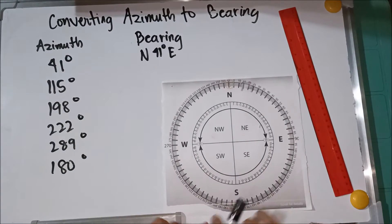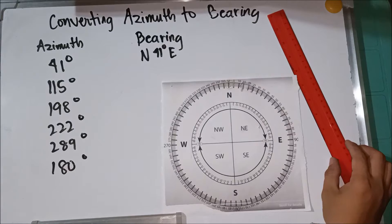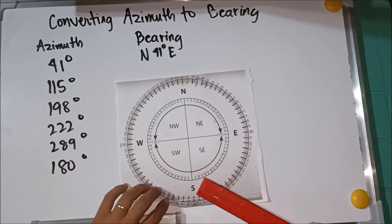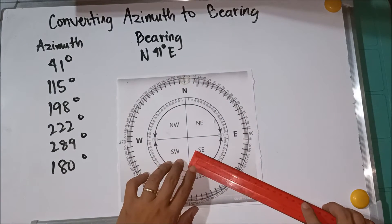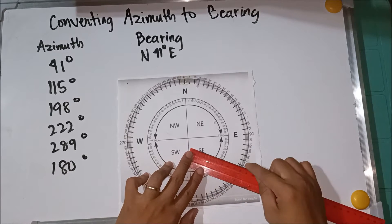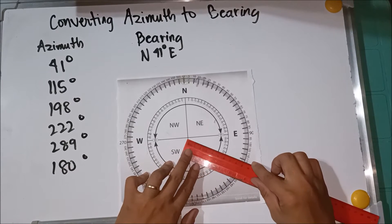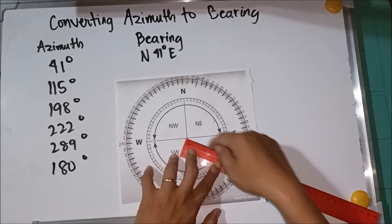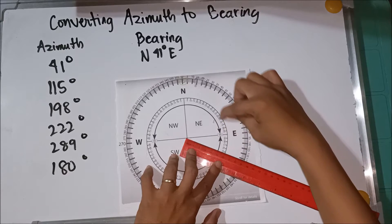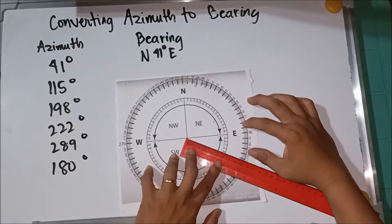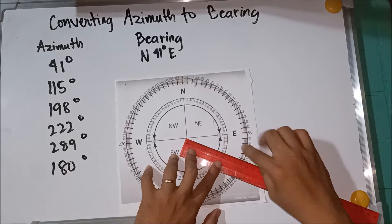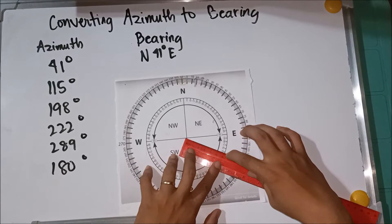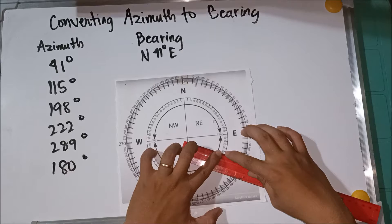Next, we have 115 degrees. So for 115 degrees, let us locate the 115 degrees for the azimuth. So 115 is here, hopefully it's clear. So 115, this is 115. Let's look at our compass.